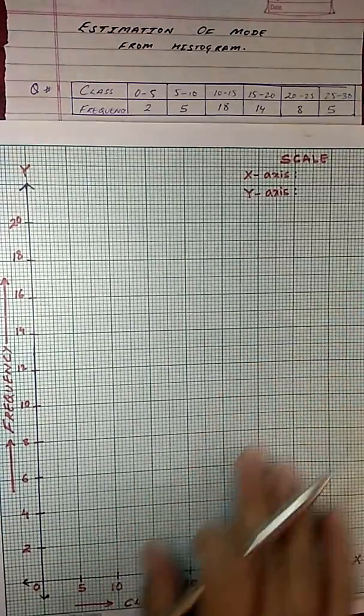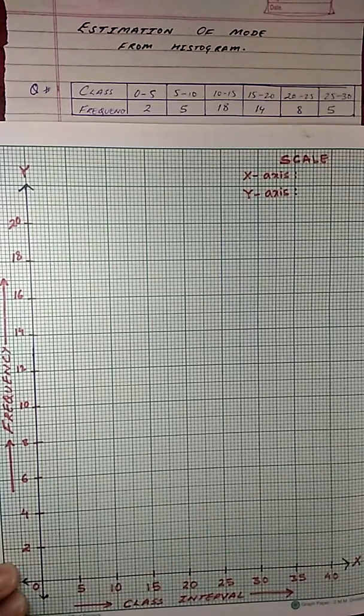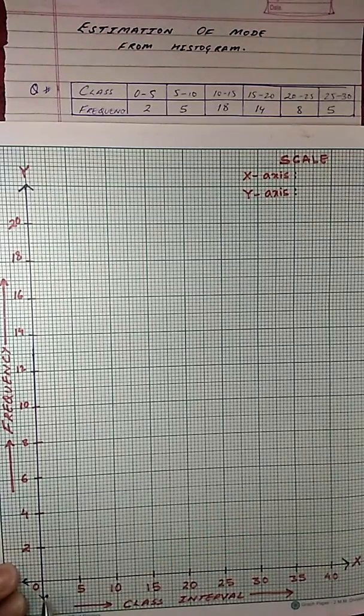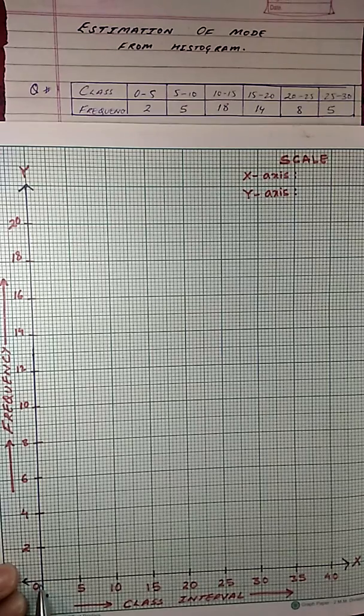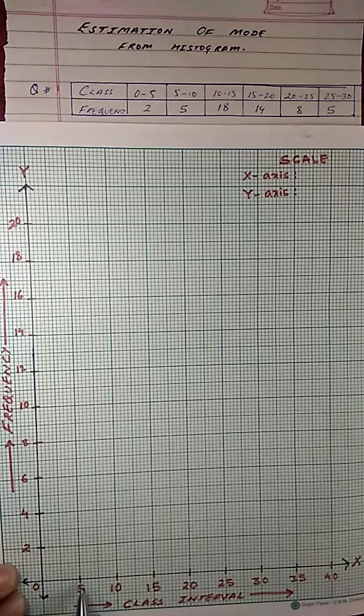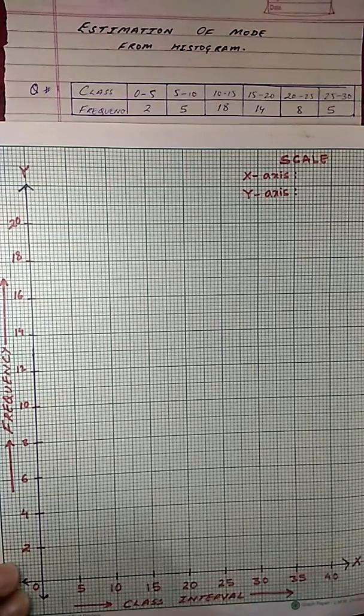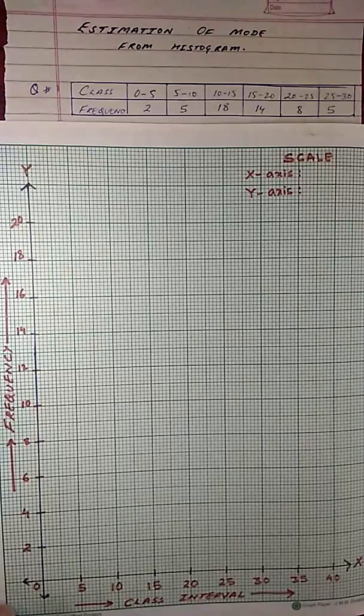Now I have plotted the class interval along the x-axis. I have chosen the origin here, the starting point and then for 2cm I have plotted 5 units such that I can plot up to 40 units here. So before I proceed, let me write down what is the scale.